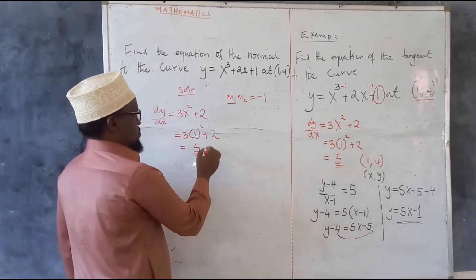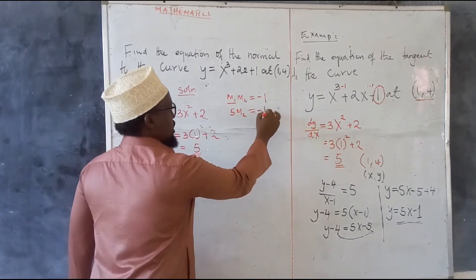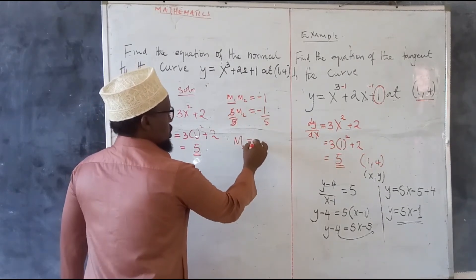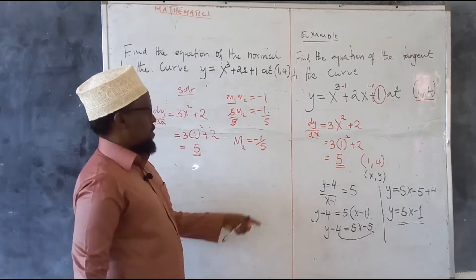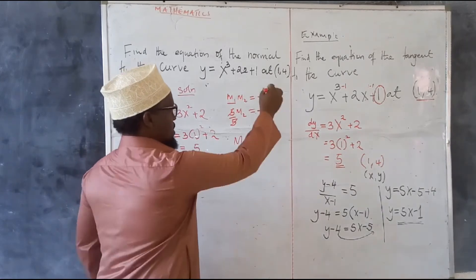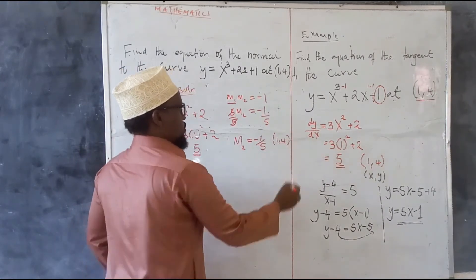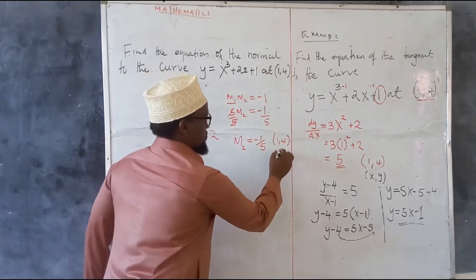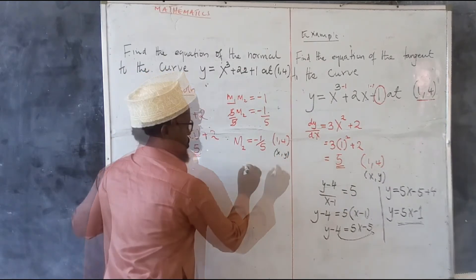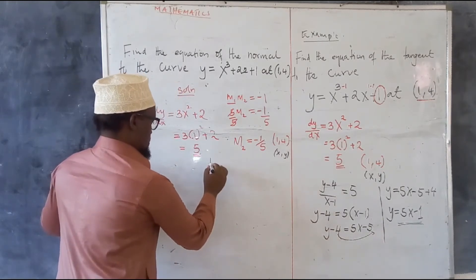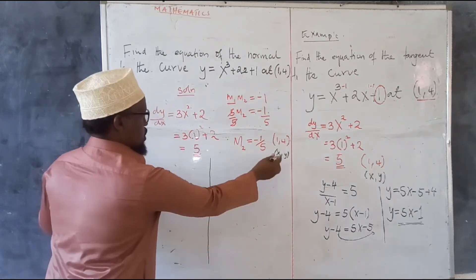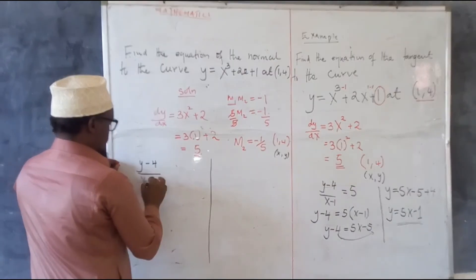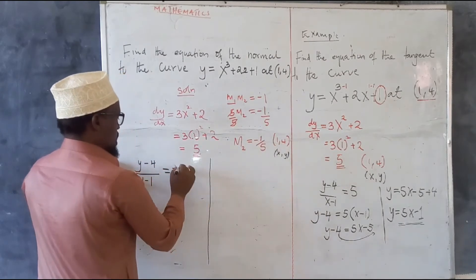Since the gradient of the tangent is 5, we have 5 times m2 equals negative 1. Dividing both sides by 5, the gradient of the normal is negative 1 over 5. We have the gradient of the normal and the point (1, 4). Choosing an unknown point (x, y): y minus 4 all over x minus 1 equals negative 1 over 5.